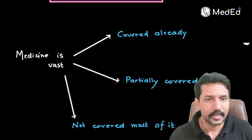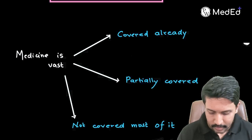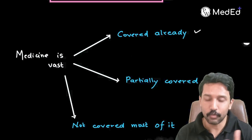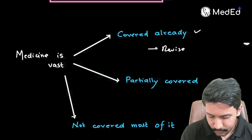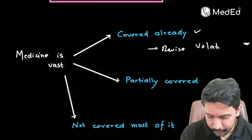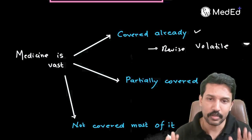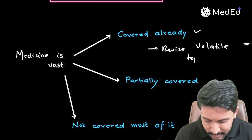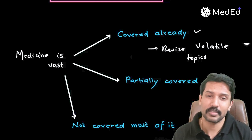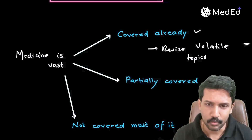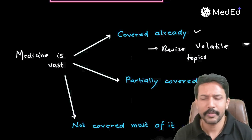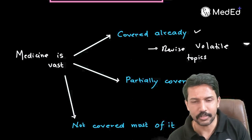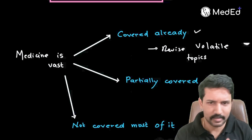Now let us understand where to start. Medicine is vast — we all agree. If you have already covered it, then just revise the volatile points: things that are difficult to remember, like scoring systems — CHAT-DS2, PSI score — or numerical criteria like the AKI definition or CKD staging. There is no concept involved in those, so just revise them.